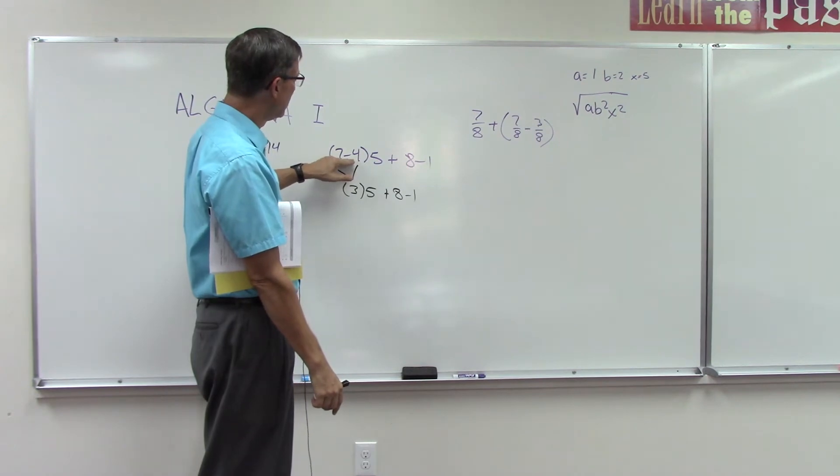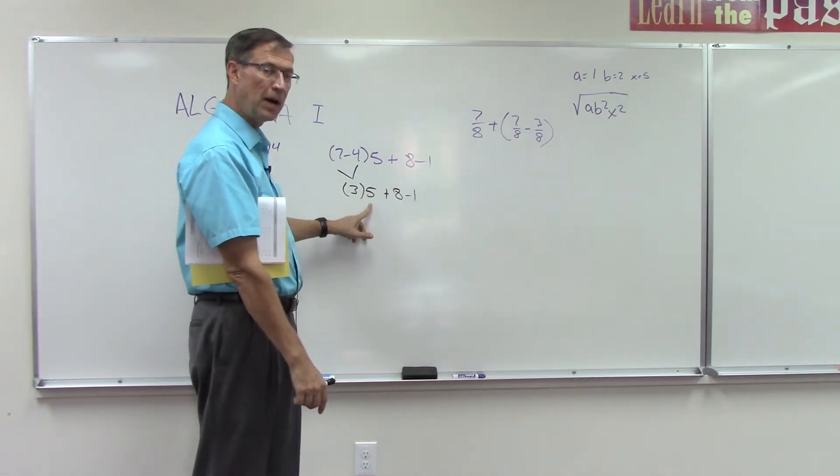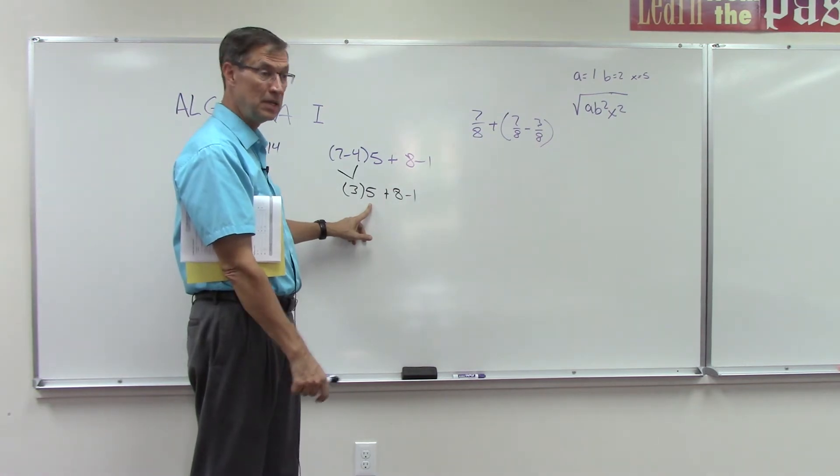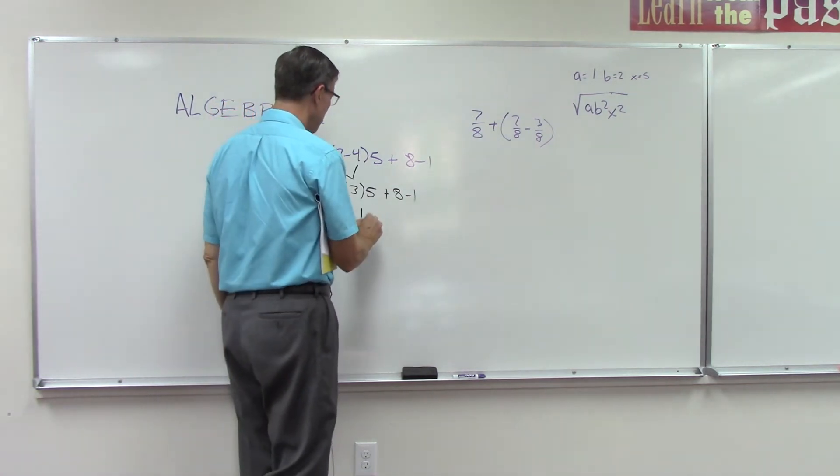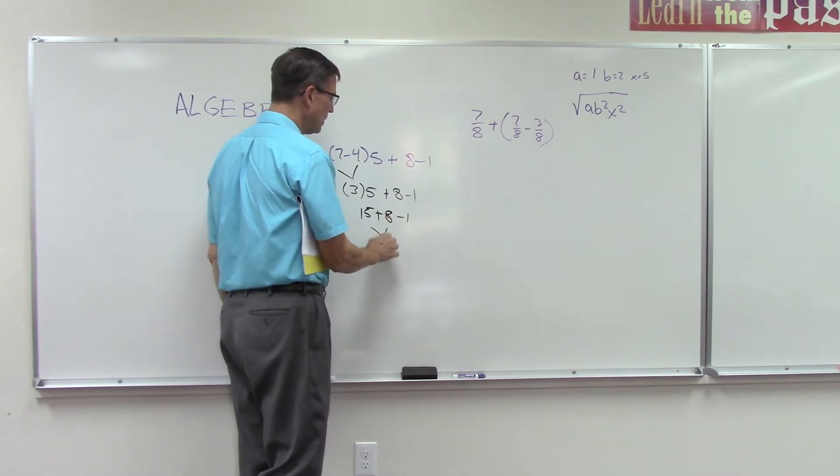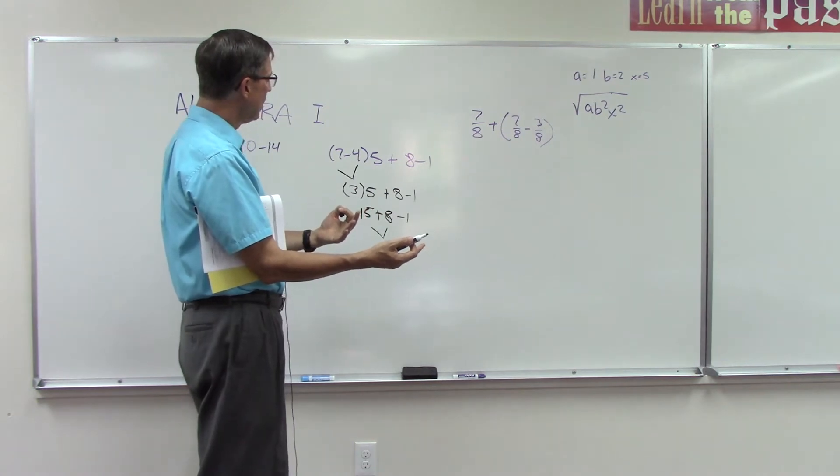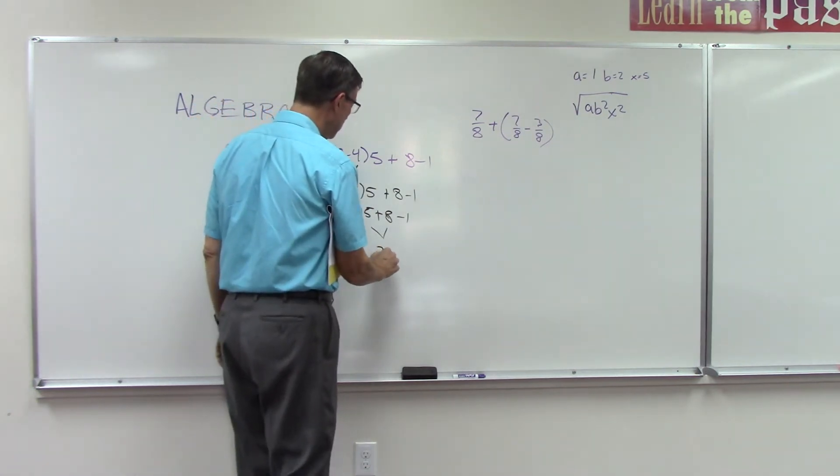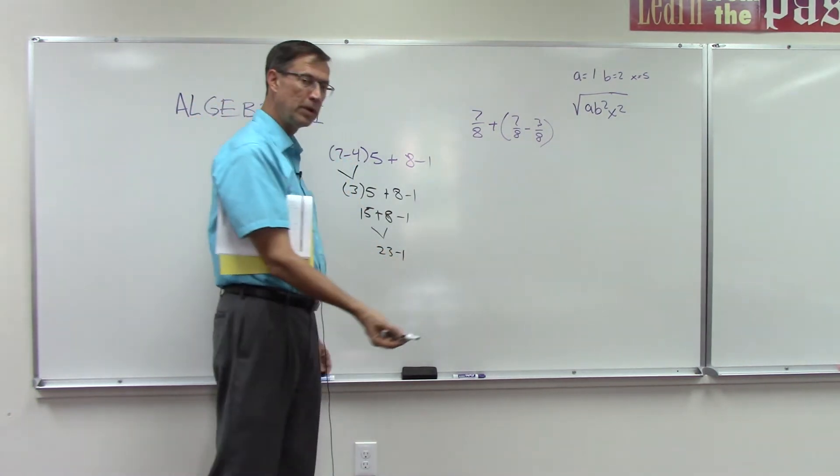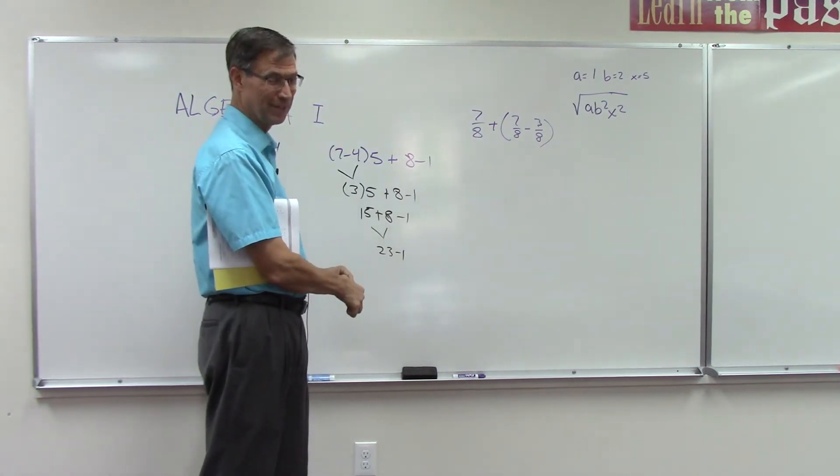So I've proven now that seven minus four is three. Now notice the three is up against a five. That gives me 15. 15 plus eight minus one. Well, what's 15 plus eight? Again, we're going from left to right. So that would be 23. Then we do 23 minus one. And I'll let you finish that one because that is actually one of your homework problems.